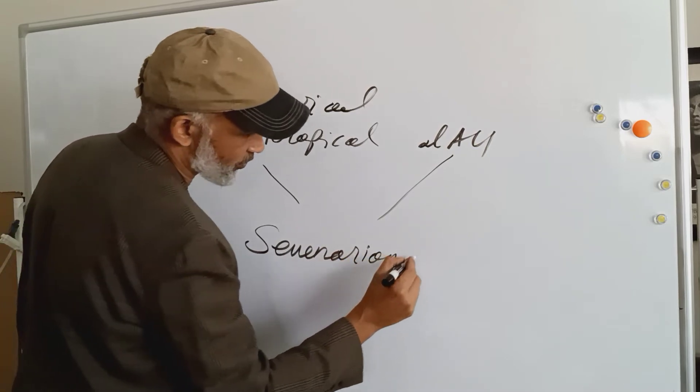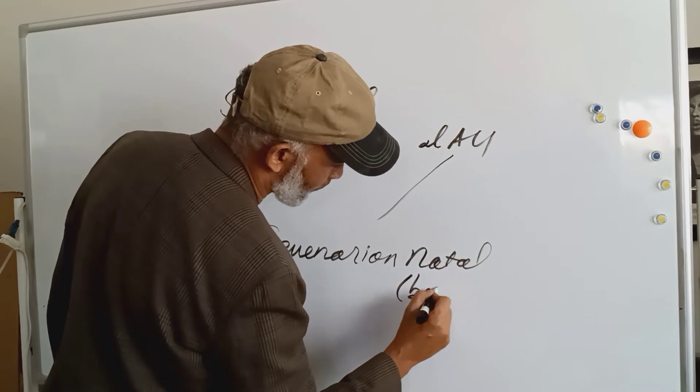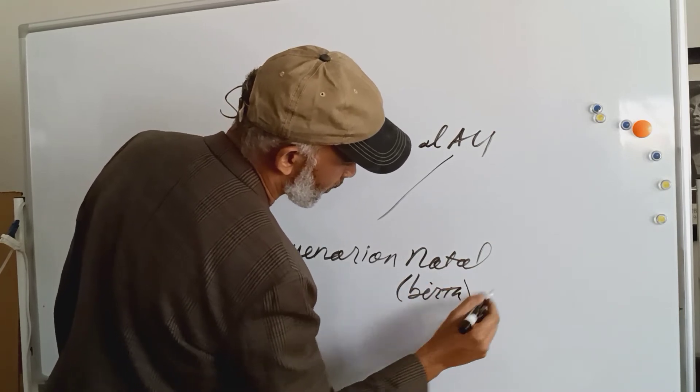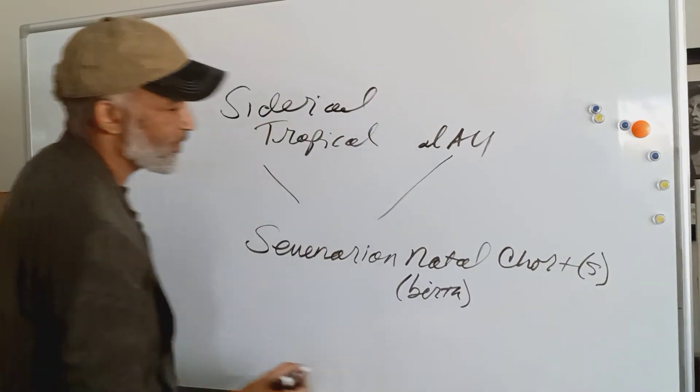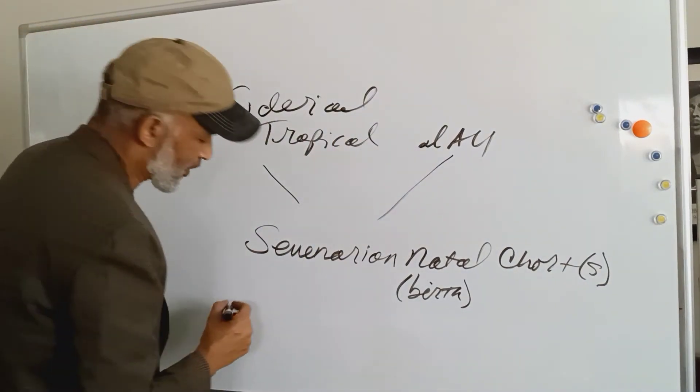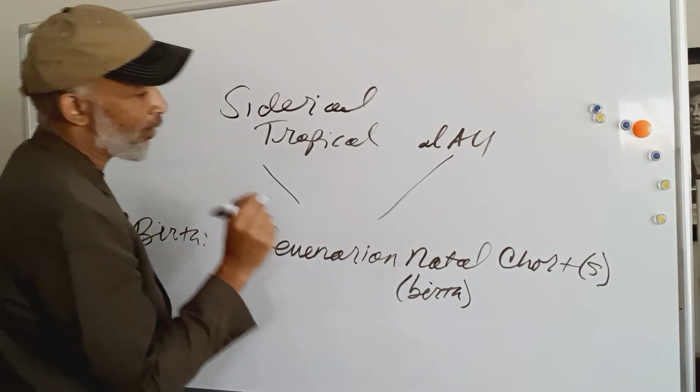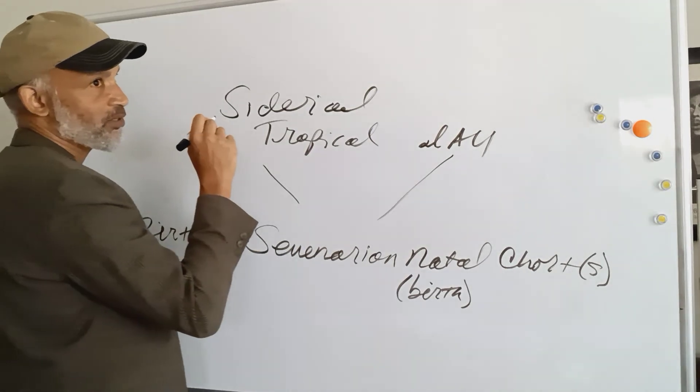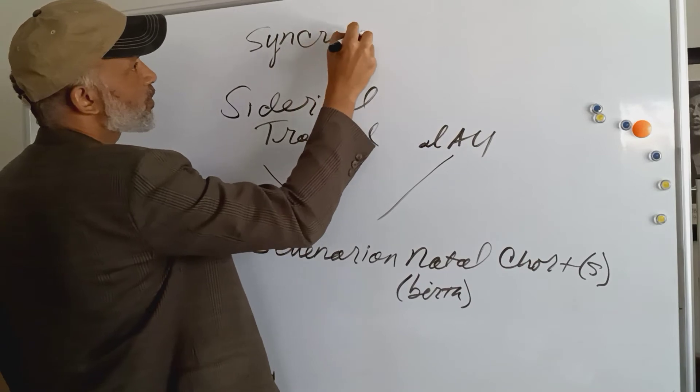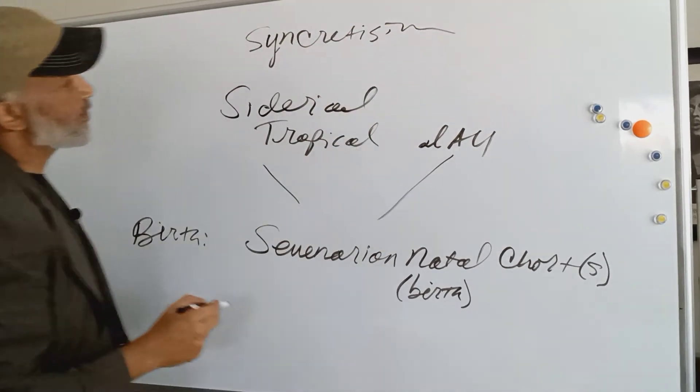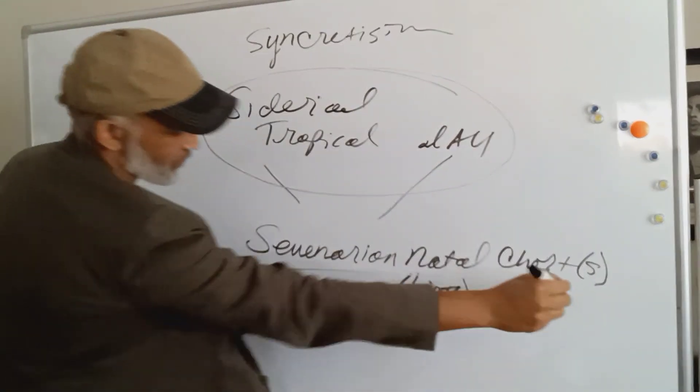Birth natal chart or birth chart. And these are to be presented to people at birth. Because our solution to the syncretism is to unite this into one new Seminarian chart, then it's given at birth.